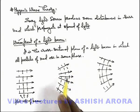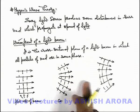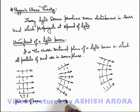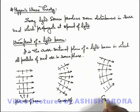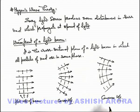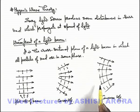So for a diverging beam, the wave front is convex, and in case of a converging beam, the wave front is concave. In the next section, we'll study Huygens' theory, which was given for the propagation of wave fronts in a light beam.